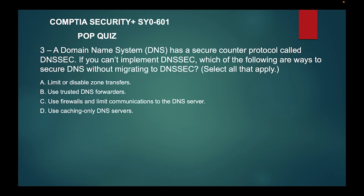Question three: A Domain Name System (DNS) has a secure counterpart protocol called DNSSEC. If you can't implement DNSSEC, which of the following are ways to secure DNS without migrating to DNSSEC? Select all that apply. A) Limit or disable zone transfers, B) use trusted DNS forwarders, C) use firewalls and limit communications to the DNS server, or D) use caching-only DNS servers.